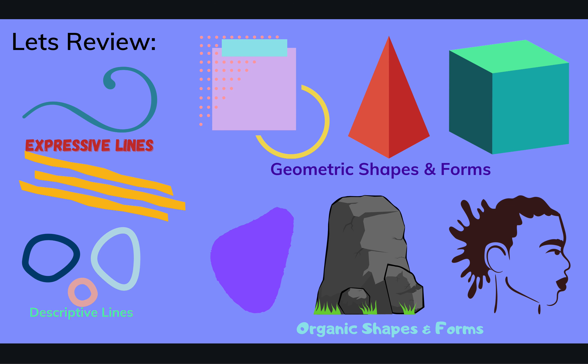Let's review what we learned over the last three classes. We've been exploring line, shape, and form. Can you identify the different types of lines that we learned? We used these lines in our abstract line drawing. Here you can see expressive lines, descriptive lines, and also implied lines.